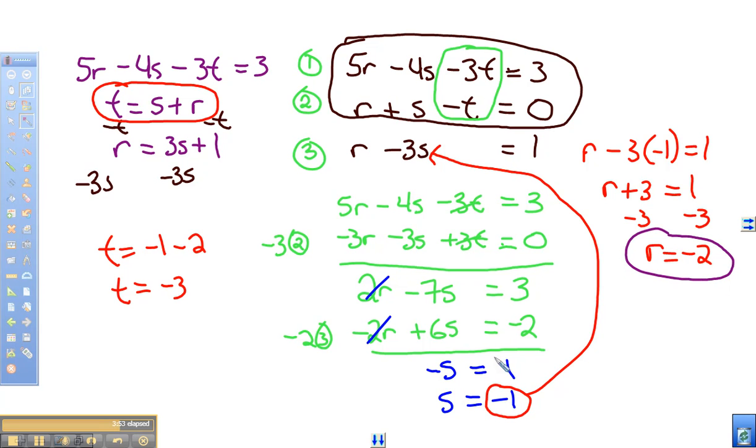and we will get R, negative 2, S negative 1, and T is negative 3.